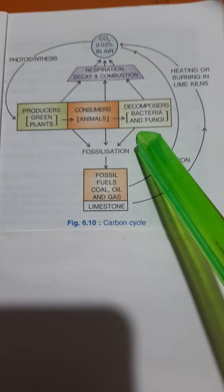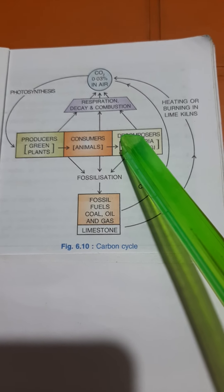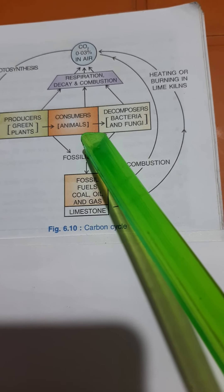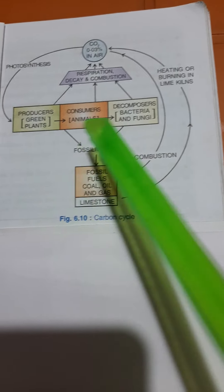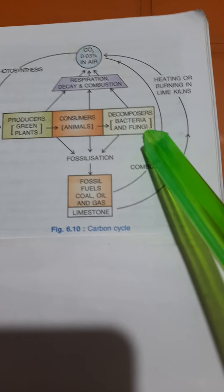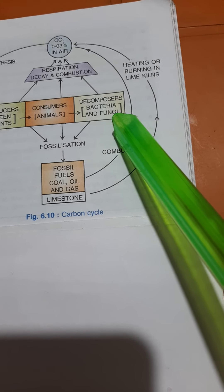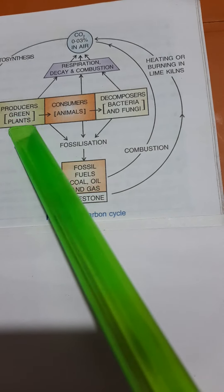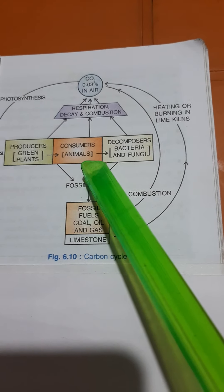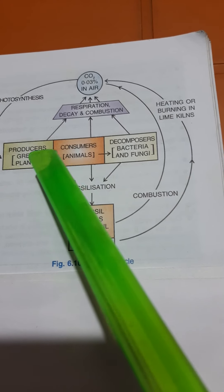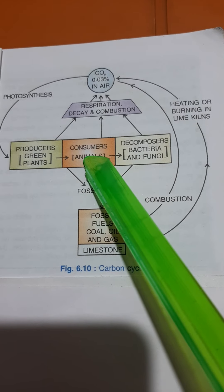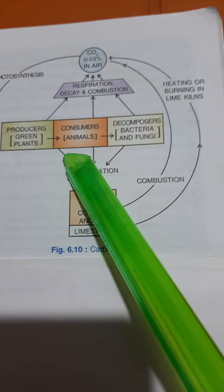The decomposers consume the dead remains of plants and animals. When they eat the dead remains of plants and animals, they break down the organic matter in them. When they are breaking down the organic matter, the carbon dioxide that is released is again sent back into the atmosphere.